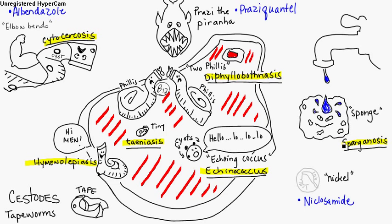Sparganosis is acquired by drinking water, eating poorly cooked meat, or using a steak on your eye when you get a black eye — like in old-time movies. You can pick up this tapeworm that way. Another treatment option is niclosamide. So those are the cestodes.